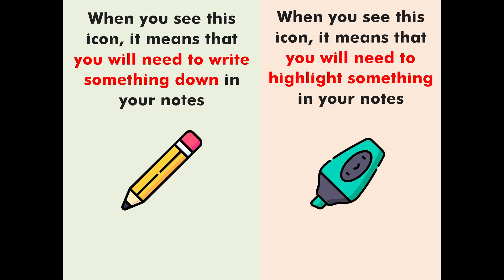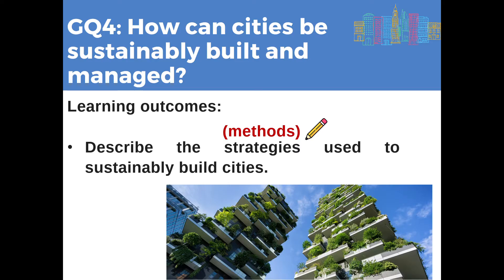A little note: in the slides there are some icons you will see. When you see a pencil icon it means you need to write something down. When you see a highlighter icon it means there is something you need to highlight. So over here we see a pencil icon — can I get you to write the word 'methods' on top of 'strategies'? The reason is that strategies refers to the methods or ways used to sustainably build cities.